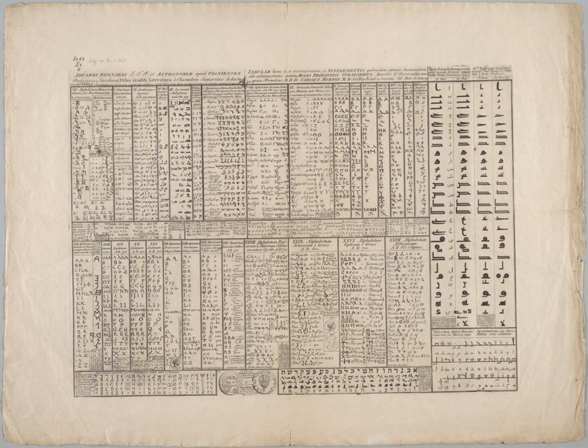The Protosinaitic or Proto-Canaanite script and the Ugaritic script were the first scripts with a limited number of signs, in contrast to the other widely used writing systems at the time: Cuneiform, Egyptian hieroglyphs, and Linear B. The Phoenician script was probably the first phonemic script and it contained only about two dozen distinct letters, making it a script simple enough for common traders to learn. Another advantage of Phoenician was that it could be used to write down many different languages, since it recorded words phonemically. The script was spread by the Phoenicians across the Mediterranean. In Greece, the script was modified to add vowels, giving rise to the ancestor of all alphabets in the West. The vowels have independent letter forms separate from those of consonants, therefore it was the first true alphabet.